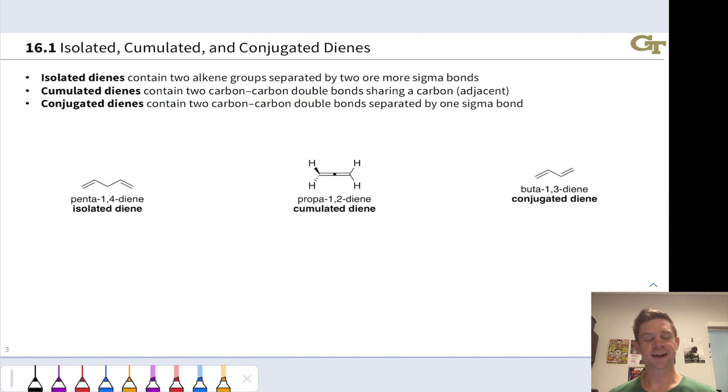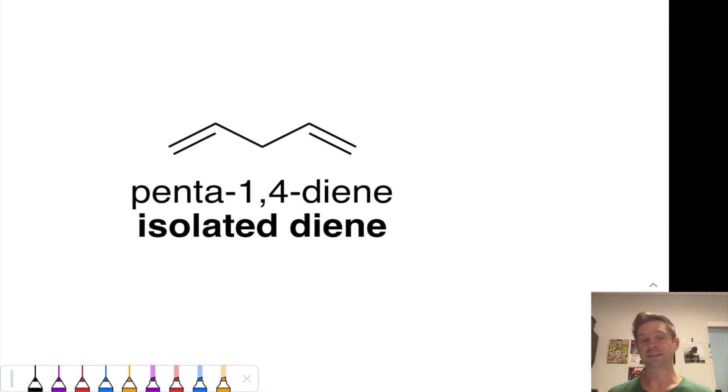Let's start with what we mean by a conjugated system, and in particular, a conjugated diene. On this slide, we see three different ways to arrange double bonds within a hydrocarbon molecule. On the left here, we have what's called an isolated diene.